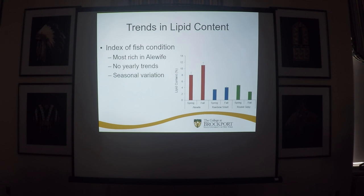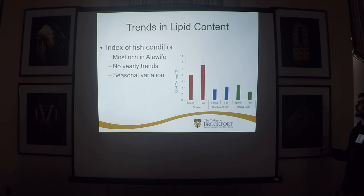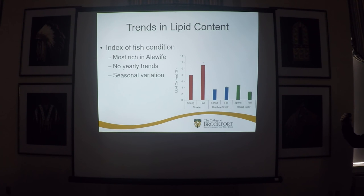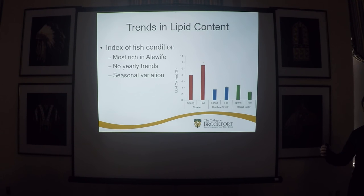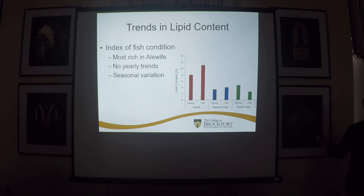Lastly, we looked at seasonal variation. In the spring there is generally lower lipid content for alewife and rainbow smelt, but in round goby there's the opposite. If you were at the plenary talk earlier today, you might remember the discussion of how alewife were moving from the upper pelagic water to more benthic areas during the winter. What we might be seeing here is that in the spring, following that winter period, these fish potentially have lower metabolism and may be feeding less due to the colder water, causing lower lipid content. This also suggests potential differences in the diets of these species based on season.